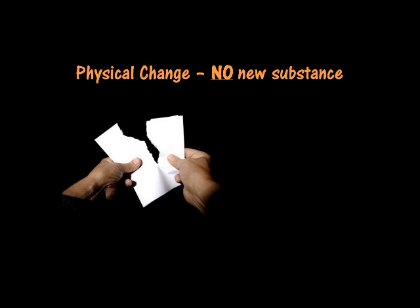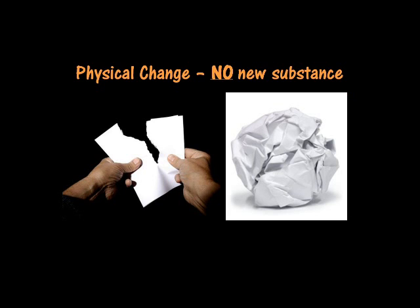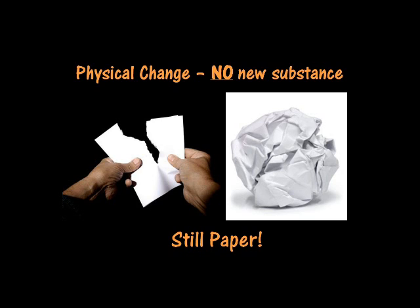So let's look at physical changes. Remember, physical changes do not make a new substance. For example, if I tear a piece of paper, I have changed its size. Or if I crumple it into a ball, I have changed its shape. But I still have paper — I have not made anything new. Size changes and shape changes are examples of physical changes. Nothing new is formed.